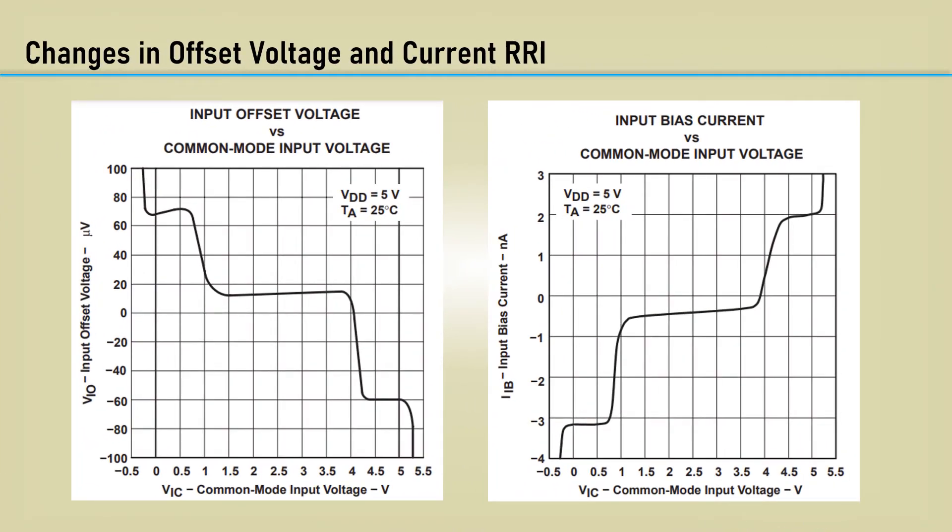Another issue caused by switching between the complementary pairs is this wild change in input offset voltage and current with changing common mode input voltage. When both PMOS and NMOS devices are switched on in the center range, the offset characteristics actually cancel each other out, and the offsets are very low.